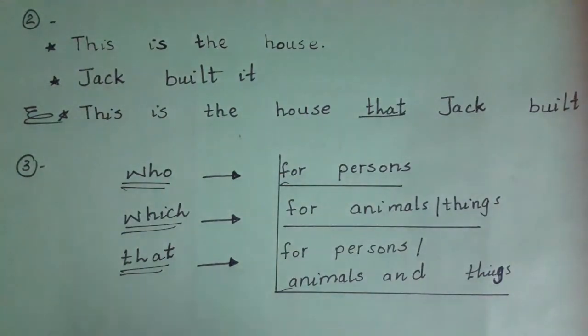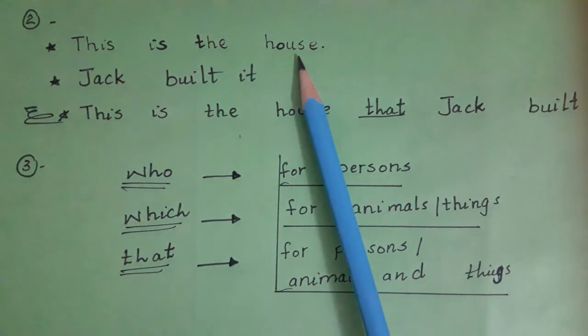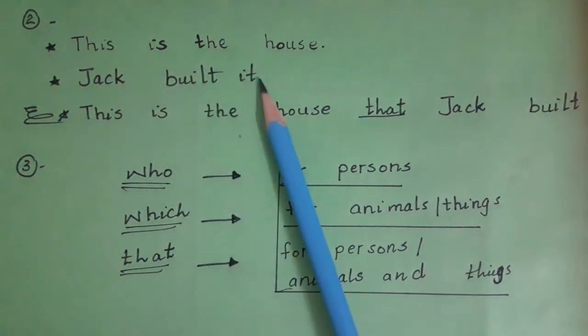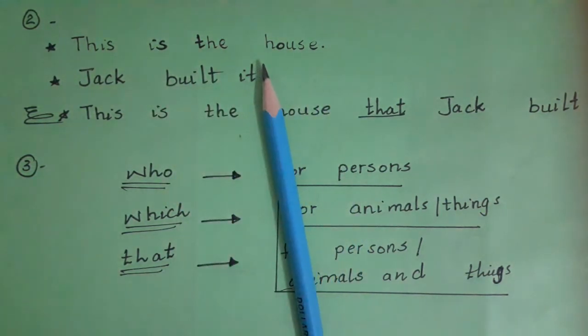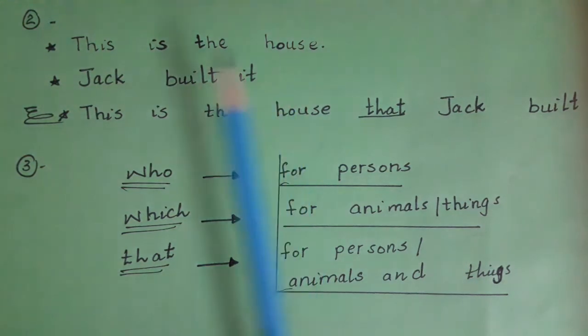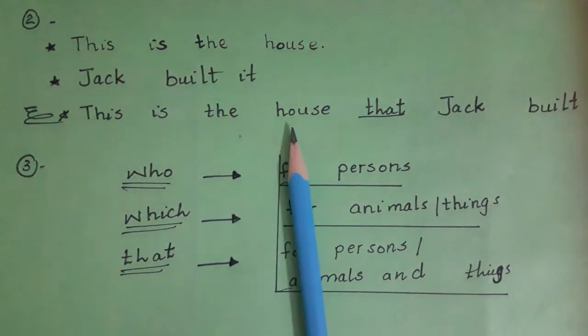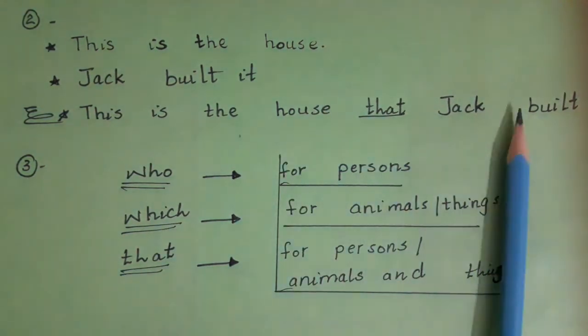Okay students, look at some other examples. This is the house. Jack built it. So we will use 'that' to join these two sentences. This is the house that Jack built.